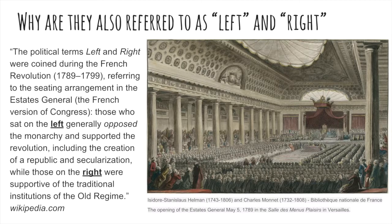I found this piece on Wikipedia that sums it up perfectly. The political terms left and right were coined during the French Revolution, referring to the seating arrangement in the Estates General — the French version of our Congress. Those who sat on the left generally opposed the monarchy and supported the revolution; they wanted the creation of a republic and secularization — basically a government like what we have today, where the people elect representatives who must do what the people want. Those on the right were supportive of the traditional institutions of the old regime. So sitting on the left meant opposing the king and queen, and sitting on the right meant supporting them. We've carried that over today: if you sit on the left in Congress, you are a Democrat, and if you sit on the right, you are a Republican.